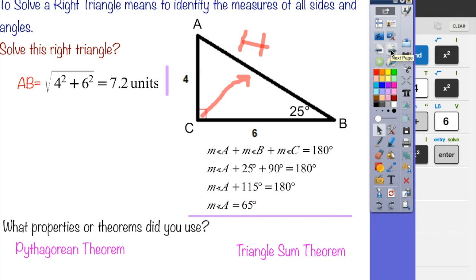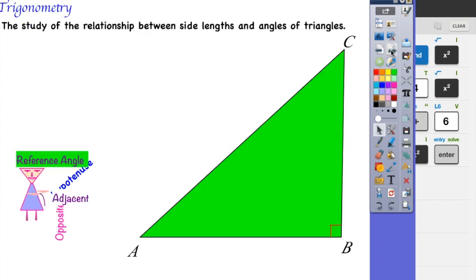Now let's learn about trigonometry. Trigonometry is the study of the relationship between side lengths and angles of triangles. And right now what we're going to be learning is the relationship between all the side lengths and angles of a right triangle. When you move on to higher level math, that's when you learn about the relationship of side lengths and angles of any type of triangle.